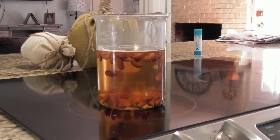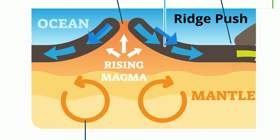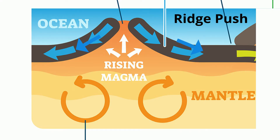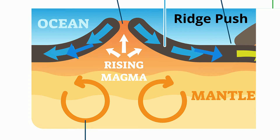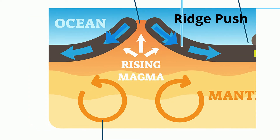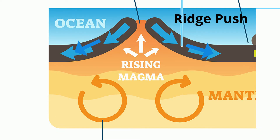Ridge push occurs when newly formed rock at the mid-ocean ridge is warmer and less dense than the older rock. The less dense rock rests on top of the older, more dense rock.